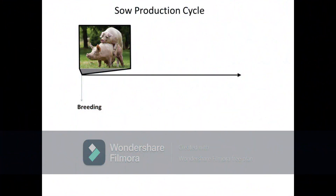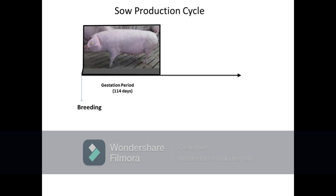Sow production cycle includes first the breeding time or time of service, which could be in the form of natural mating as shown in the picture or through the use of artificial insemination. After a successful service, the sow or gilt proceeds to the period of gestation, which takes about 114 days or 3 months, 3 weeks, and 3 days.